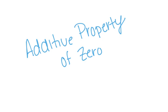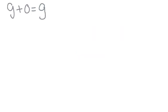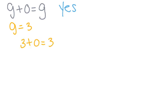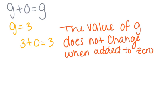Now let's look at the additive property of 0. We are going to be using the expression G plus 0 equals G. Remember, a letter in a mathematical expression represents a number. Can we replace G with any number? Yes, we can replace G with any number. We're going to choose a value for G and replace G with that number in our equation. I've chosen the number 3, so G is going to equal 3. Our equation now reads 3 plus 0 equals 3. The value of G does not change when added to 0.